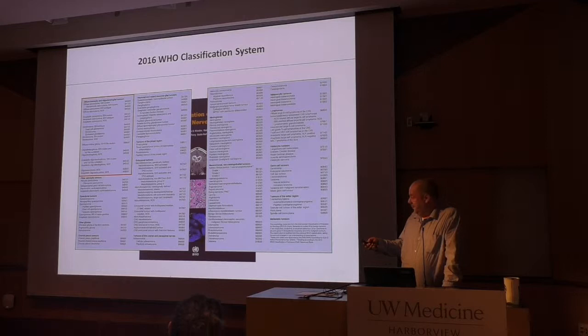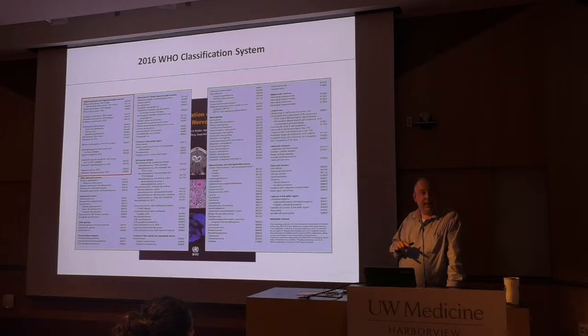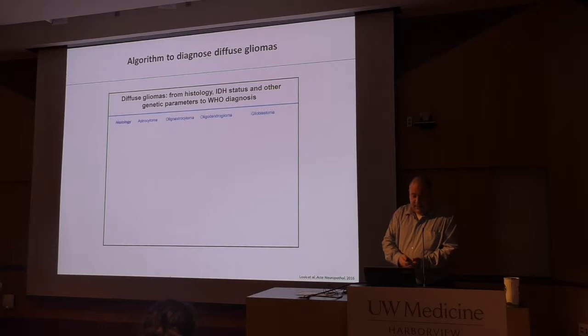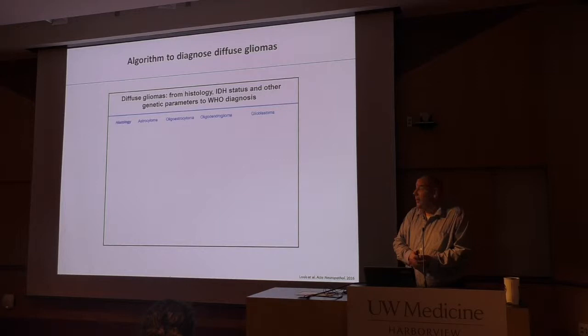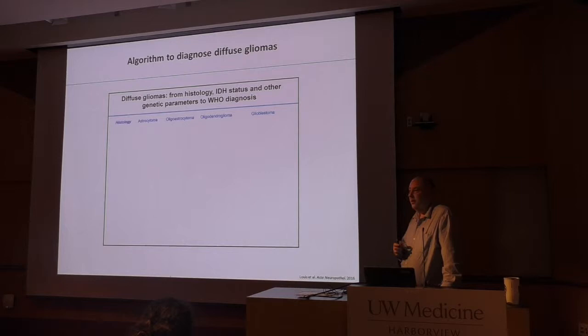They've gotten rid of the wastebasket term oligo-astrocytoma, because if you call something that and do molecular profiling, it can be resolved into either astrocytoma or oligodendroglioma. A simple algorithm: start with histology — you have to confirm it's a diffuse glioma. The microscope is here to stay as the foundation. Then look at IDH mutational status. If it's a glioblastoma, you're done — IDH mutant versus IDH wild-type. This reduces arguing at neuropath QA conferences, which is really nice.